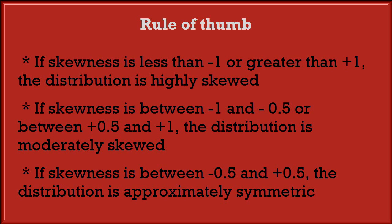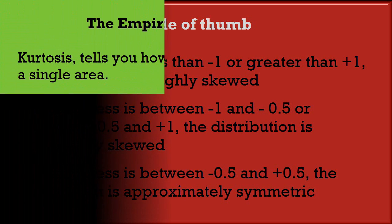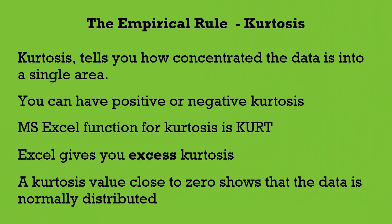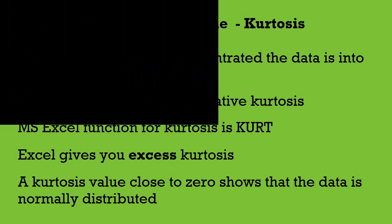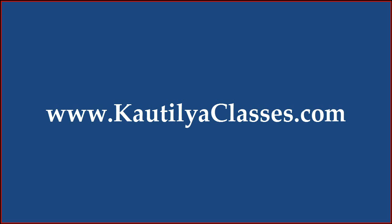If a distribution is symmetric, the next question is about the central peak: is it high and sharp or short and broad? Kurtosis tells you how concentrated the data is into a single area, and shows how clustered the data is to the modal value. You can have positive or negative kurtosis. In Excel, a kurtosis value close to 0 shows that the data is normally distributed.